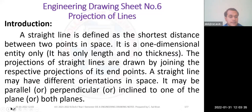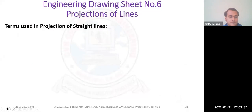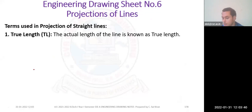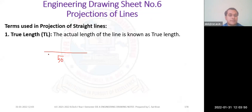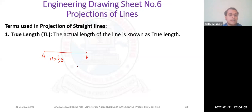Terms used in projection of lines: True Length (TL) is the actual size of the line — for example, if the line AB is 50 mm, then TL equals 50 mm. You must write TL for the line in your answer. When a line is inclined to 30 degrees from its original position, the projected length seen is shorter than the true length. The point B when rotated is labeled as B dash to distinguish from the original.